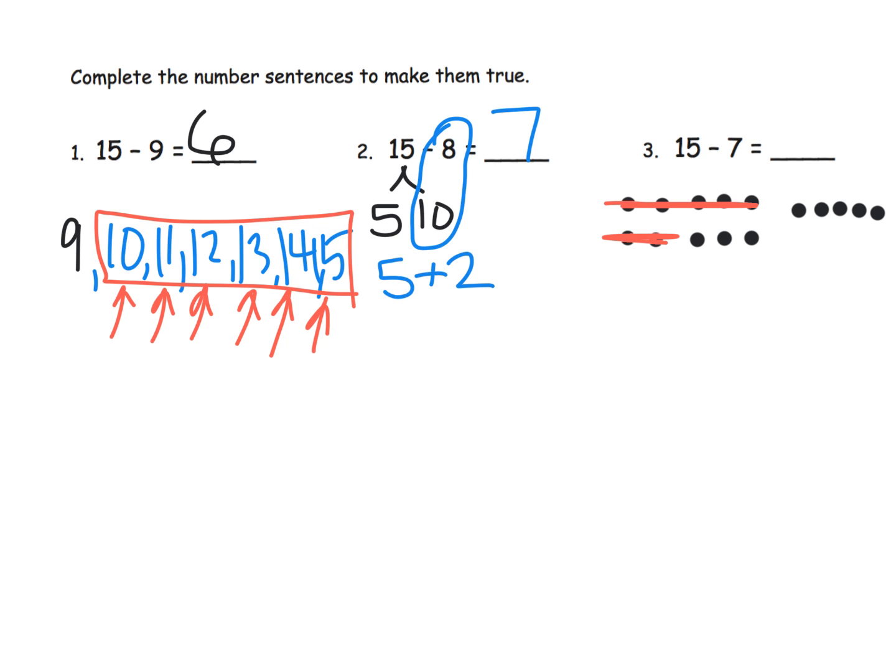Well, 3 plus 5 gives me 8. So starting with that 7, I've got 3 more to fill out the first 10 frame. Plus, I've got the 5 left over from the 15. So 3 plus 5 is 8.